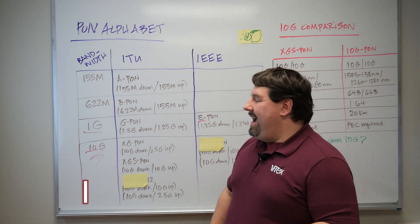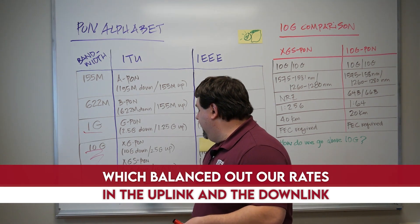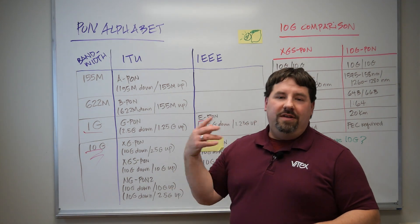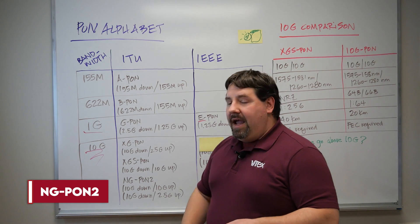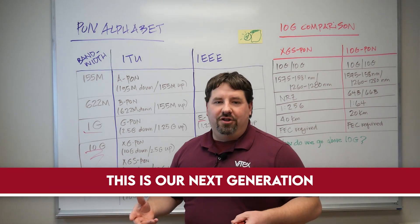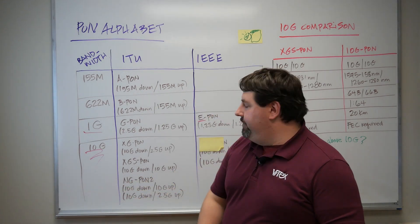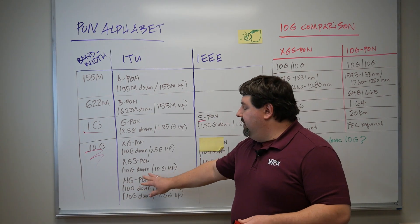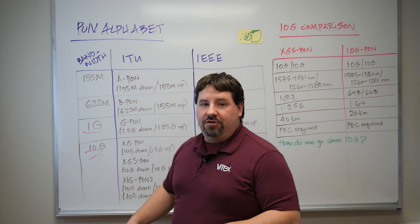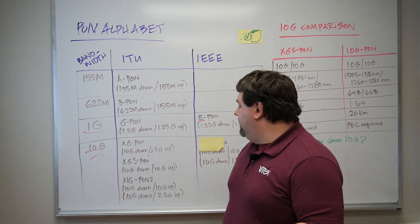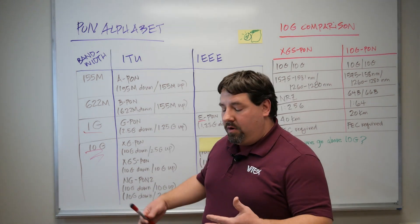After XG-PON came XGS-PON, which balanced out the rates in the uplink and downlink to symmetric 10 gig. After that, we went back to lettering with NG-PON2 — NG standing for Next Generation. The objective of NG-PON2 was to add bi-directional capability using different wavelengths, so that G-PON, XG-PON, and other standards can coexist in the same network.